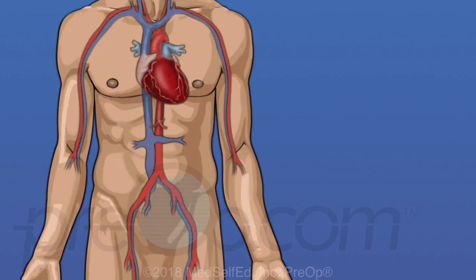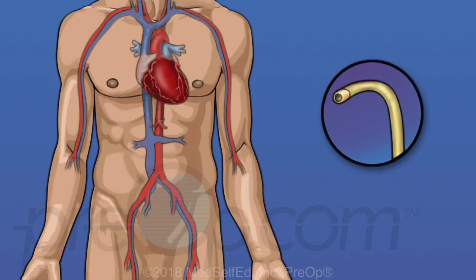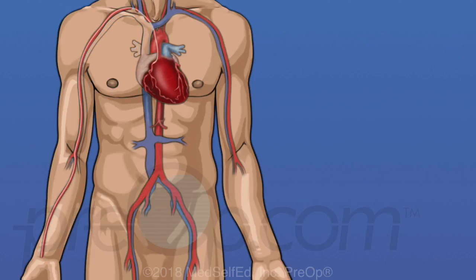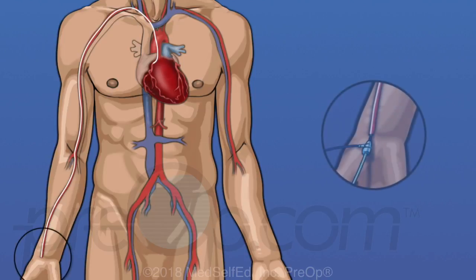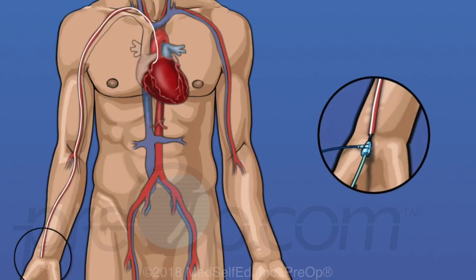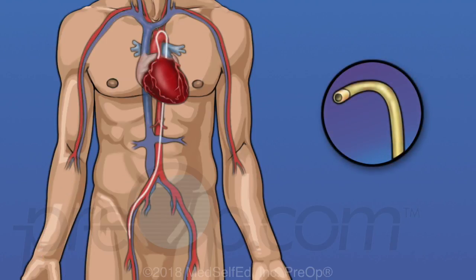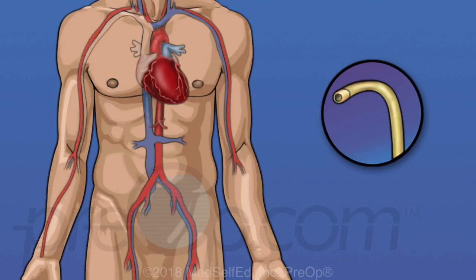To do a cardiac cath, a cardiologist places a thin tube called a catheter through an artery in your leg or arm to reach your heart. The femoral artery in the leg is most commonly used — the catheter is inserted into the artery in the groin, then guided to reach the heart. The radial artery in the arm is another site where a catheter can be placed, inserted at the wrist and guided to reach the heart. Which artery is selected depends on your personal situation and the experience and training of your cardiologist.